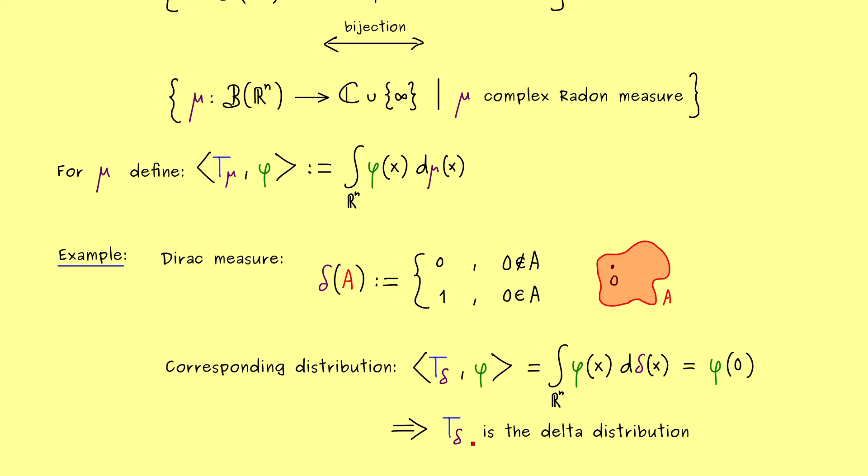So for distributions of order 0, it's a matter of taste if you want to work with them or with the measures.